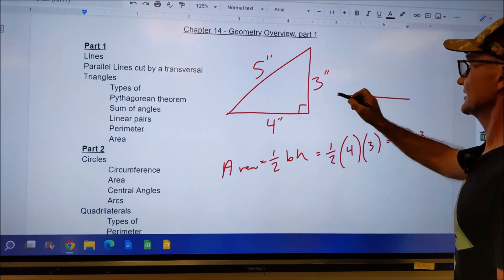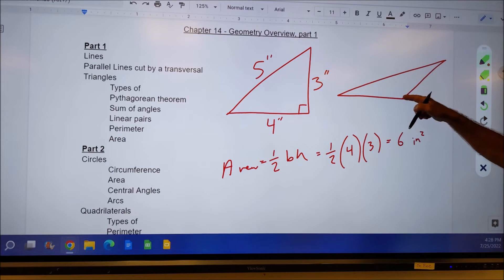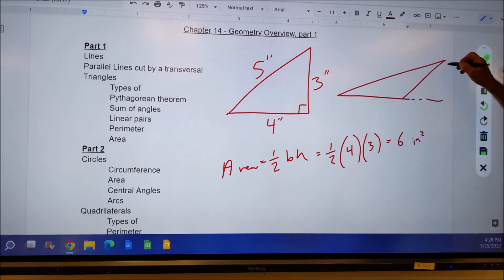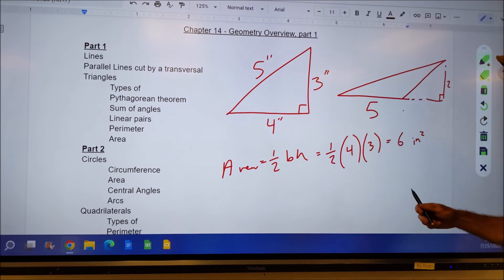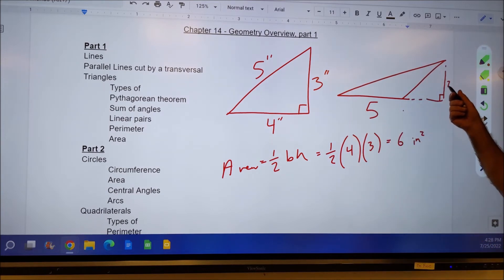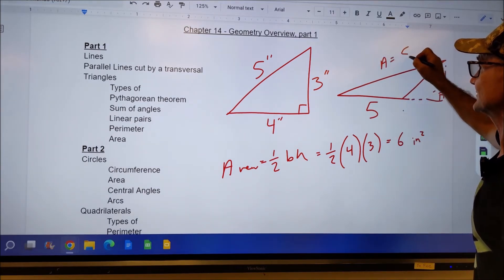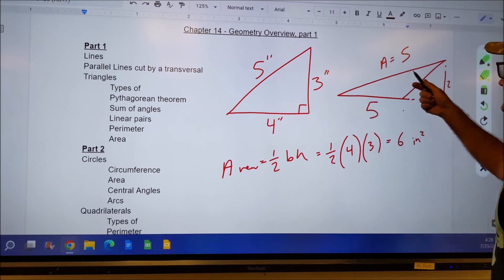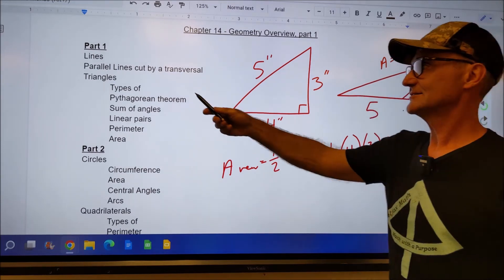Here's another obtuse triangle, meaning that the angle is greater than 90 degrees. The altitude for this triangle is actually outside of it. Let's say the altitude or the height is two. And the base here is five from here to here is still base times height divided by two, five times two divided by two is equal to five. So the area of this triangle right here would be five. To find the perimeter, you'd have to find all three sides and add them all up. A little bit about triangles.